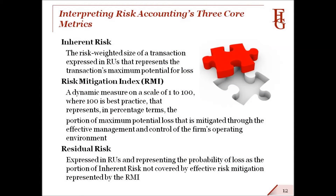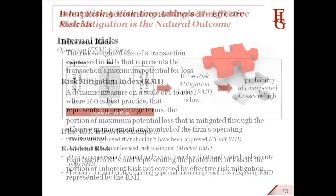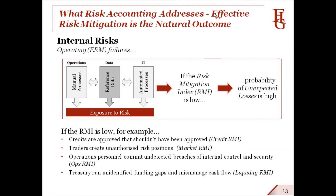Here is an interpretation of risk accounting's three core metrics. Inherent risk in RUs is representative of the transaction's maximum potential for loss. The risk mitigation index is a measure of the effectiveness of the enterprise in mitigating inherent risk through the effective management and control of the firm's operating environment. And residual risk in RUs is representative of the probability of unexpected loss — being the portion of the inherent risk not covered by effective risk mitigation. So quite simply, if the risk mitigation index is low, the probability of unexpected loss is high. For example, if the credit risk mitigation index is low, there's a high probability that loans have been approved that shouldn't have been approved. Or if the market risk mitigation index is low, there's a high probability that traders are operating unauthorized positions.